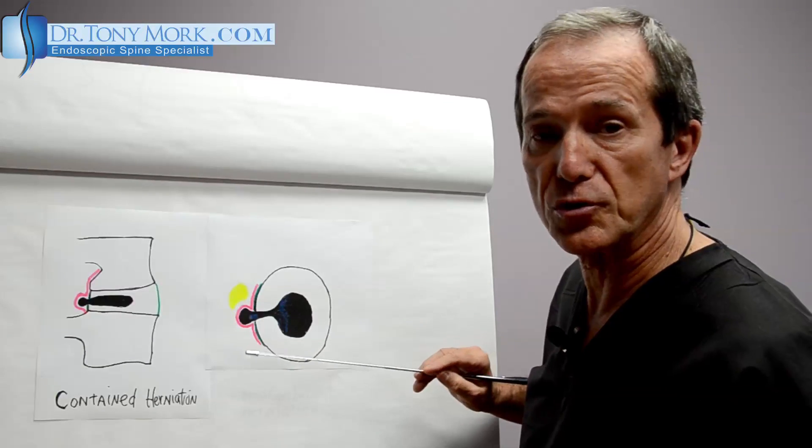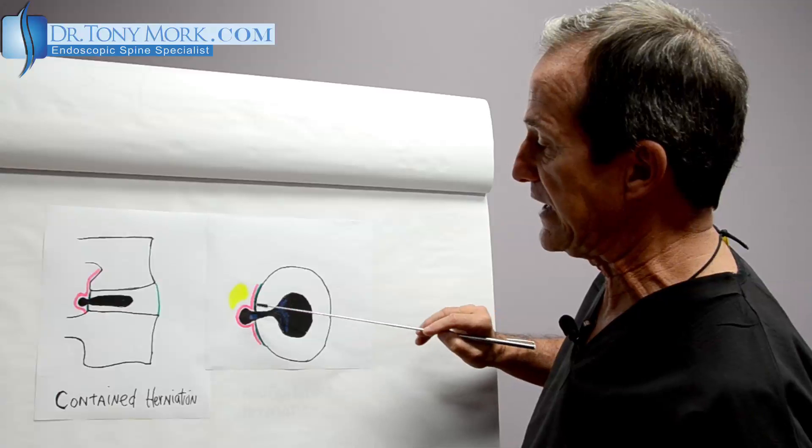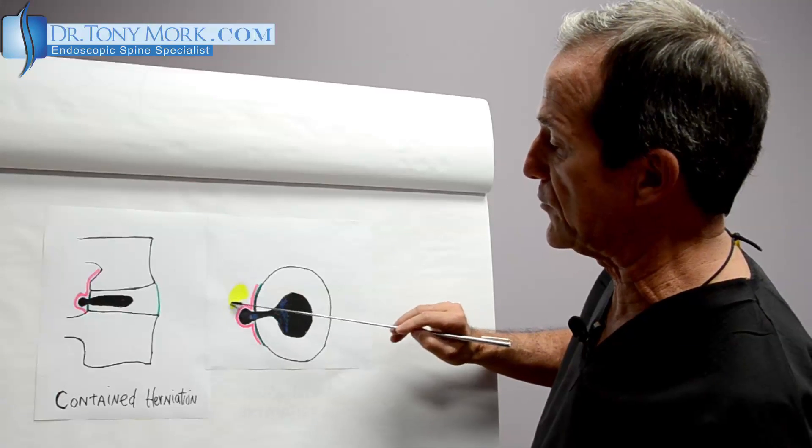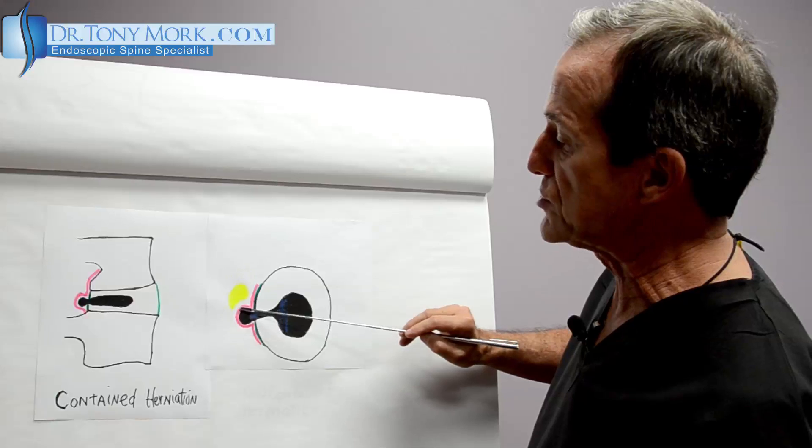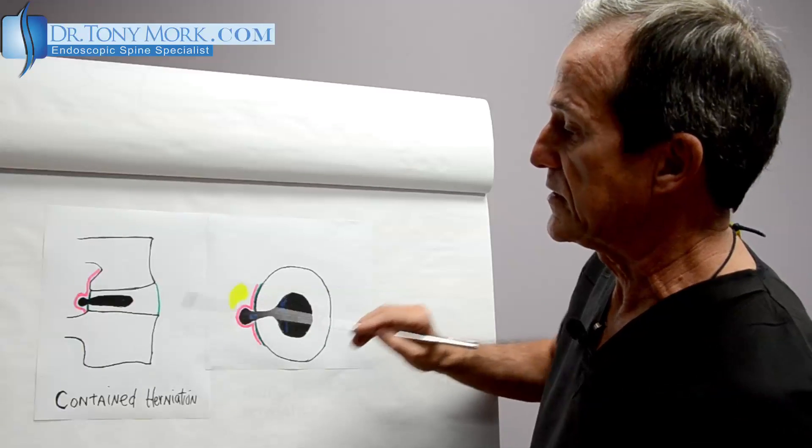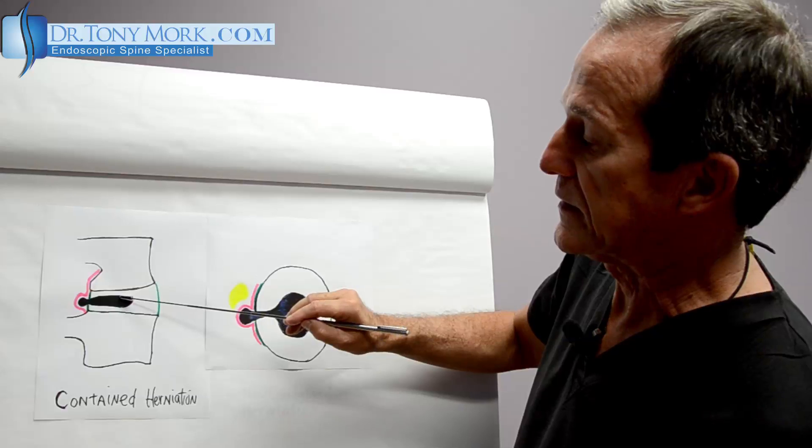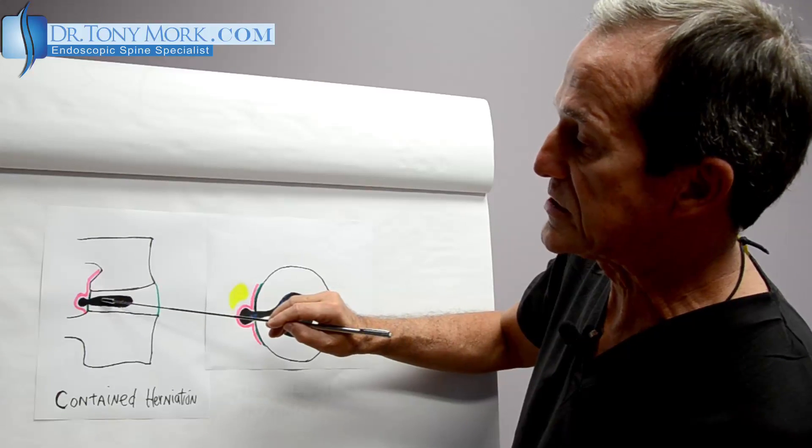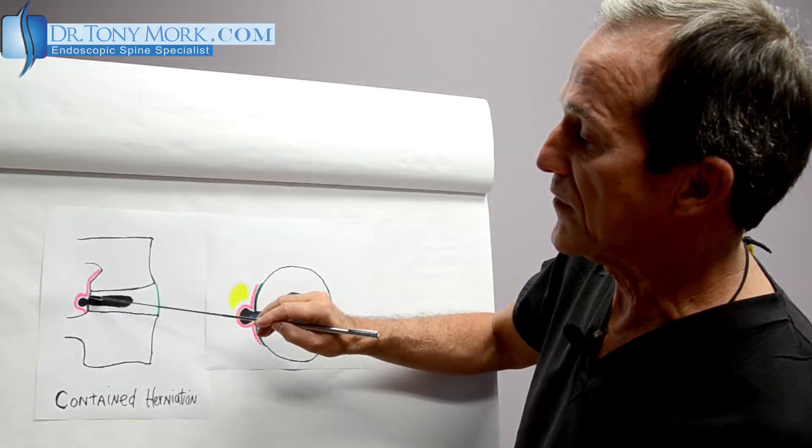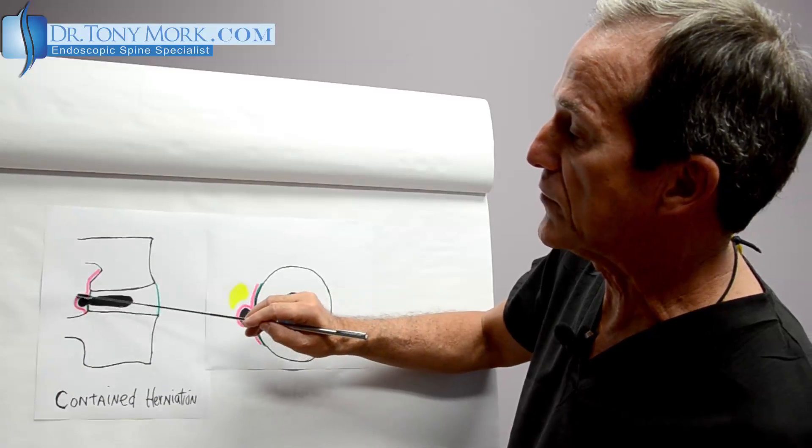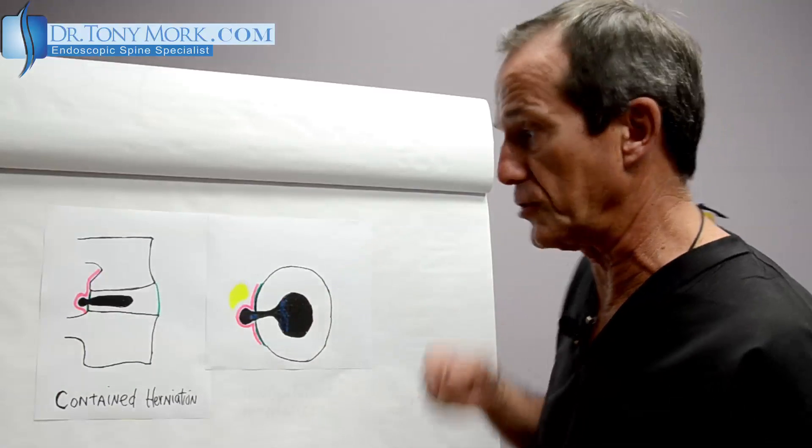So that's what's containing it, the posterior longitudinal ligament. There's the spinal cord. You can see how the nerve here is impinged on by the disc. So on the side, you can see that the disc center of the nucleus extends out through an annular tear beyond the annulus and then it ends up out here. It's covered by the posterior longitudinal ligament.